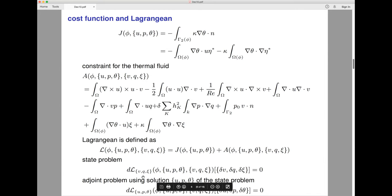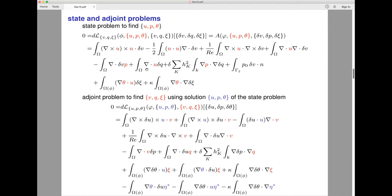Here is the state problem for Navier-Stokes plus heat equation. If we take the variation against the Lagrange multiplier d_q and ξ, delta d q and delta d ξ is a variation, so we can get this.